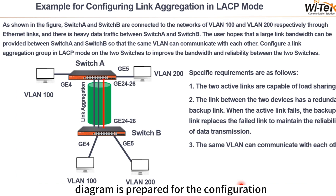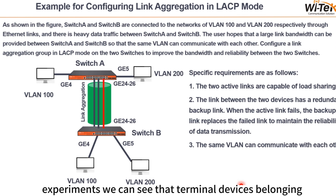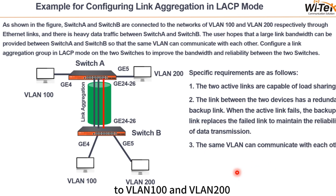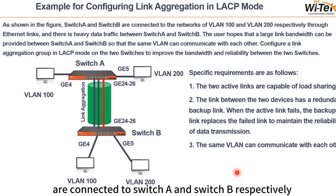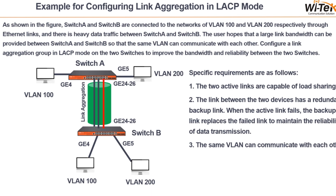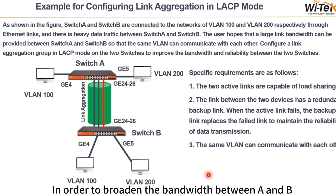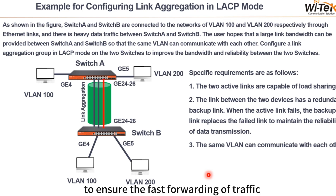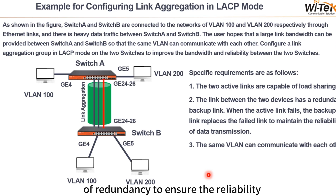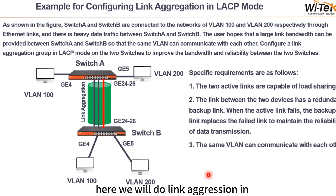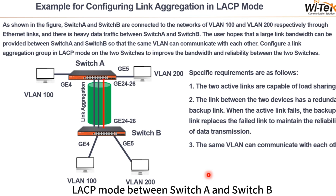To demonstrate the configuring of link aggregation, the following topology diagram is provided for the configuration experiment. We can see that terminal devices belonging to VLAN 100 and VLAN 200 are connected to switch A and switch B respectively. This section simulates a large bandwidth scenario for departments in order to broaden the bandwidth between A and B, ensure fast forwarding of traffic, and provide a certain degree of redundancy to ensure the reliability of data transmission and links. Here we will do link aggregation in LACP mode between switch A and switch B.